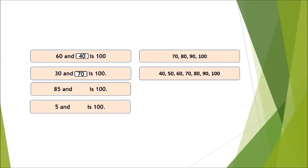Now look at the third part: 85 and dash is 100. The first part 85 is ending at 5, so here you will skip count in 5s. Let's start: skip counting in 5s after 85 to 100 — 90, 95, 100. How many 5s have you counted on your fingers? Yes, 3 fives. And 3 fives are 15. So 85 and 15 is 100.